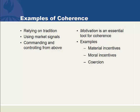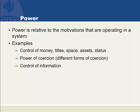There can be material incentives, moral incentives, or coercion that would get us to cohere to these coordinating signals. Power comes in because power is relative to the motivations that operate in a system. Many people accumulate power by controlling money and titles and space in an office and assets and status. And they deploy that control to make individuals motivated to become more coherent in the system.